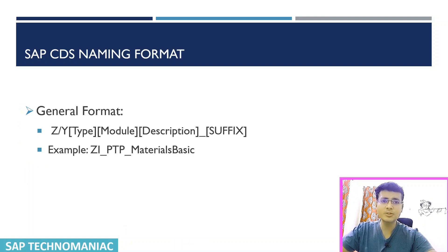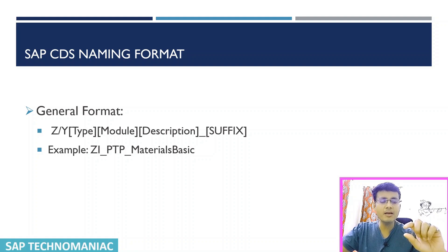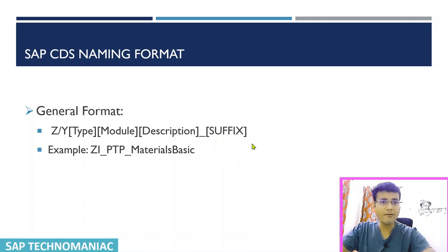We start with the CDS naming convention. The general format starts with Z or Y for custom objects — for production objects, always Z. Then we add the module for which you are creating the CDS: SD, MM, or 2-3 character codes like PTP. Some companies don't use the module name in the object name if they organize by package. Then we give an appropriate description and a suffix.